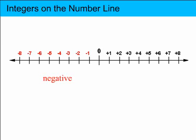Negative numbers get smaller the farther away from zero you move, and the numbers to the right are called positive numbers, and they get larger the farther away from zero you move.